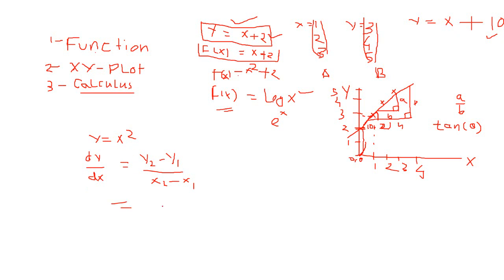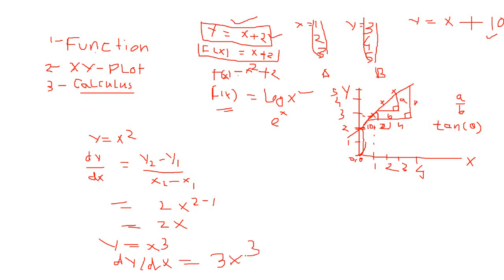DY by DX of X squared is 2 times X to the power 2 minus 1. What you do is bring the power 2 to the left of X, and subtract 1 from the power — so you finally get 2X. If Y is equal to X cubed, then DY by DX is 3X squared. The general formula is: if Y equals X to the power N, then DY by DX equals N times X to the power N minus 1.